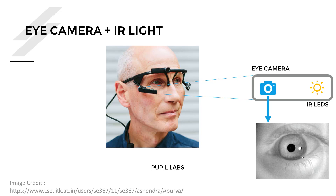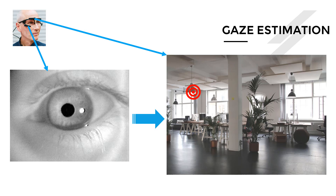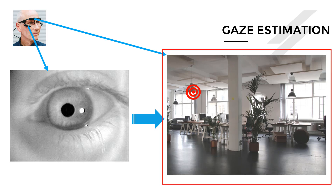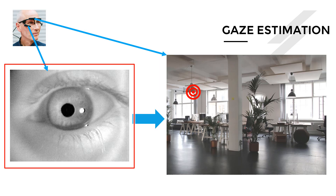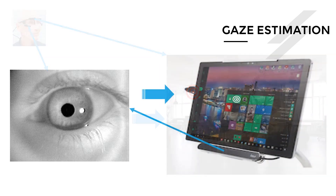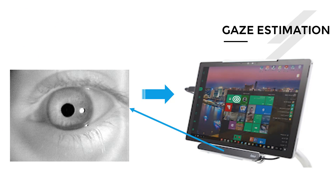Now we are ready to formulate the gaze estimation problem. We have an input image — on the left, the eye image — and we have to determine where the person's gaze is. The red target sign shows where the gaze is directed. We use this eye image as primary input to figure out where the person is looking in the scene camera view.